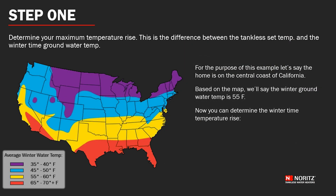Step one is where you determine the maximum temperature rise. This is the difference between the tankless set temperature and the wintertime cold water temperature. You may reference the map below or simply measure your cold water in the wintertime to find out. For this example, let's say the home is on the central coast of California. Based on the map we'll say the winter groundwater temperature is 55 degrees Fahrenheit.